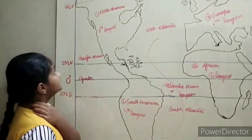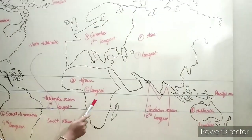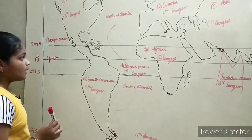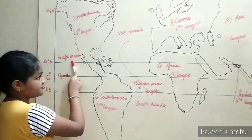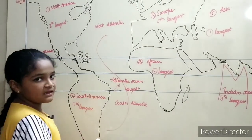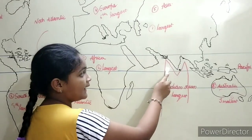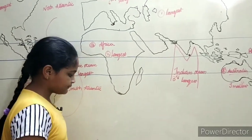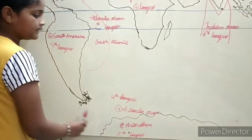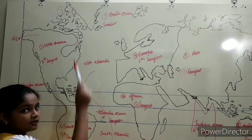I will repeat once again. Continents: North America, South America, Africa, Europe, Asia, Australia, and Antarctica. Oceans: Pacific Ocean, Atlantic Ocean (in S-shape), Indian Ocean (in M-shape) — Bay of Bengal and Arabian Sea are parts of the Indian Ocean. Antarctic Ocean — here is the Antarctic Ocean and Antarctic Continent with the Antarctic Circle. And Arctic Ocean — here is the Arctic Circle and Arctic Ocean.